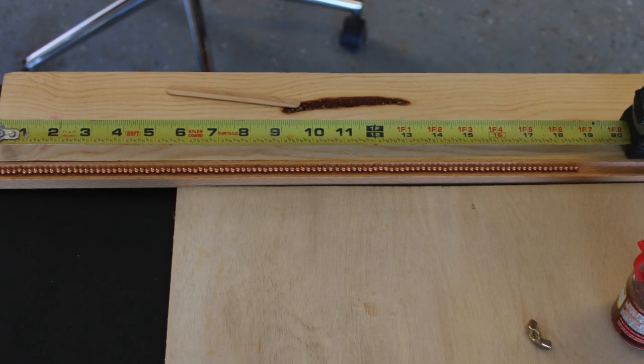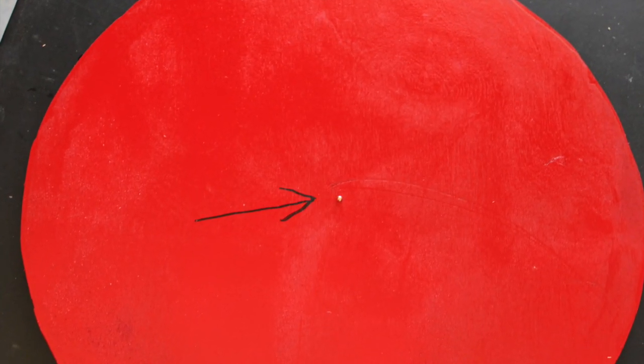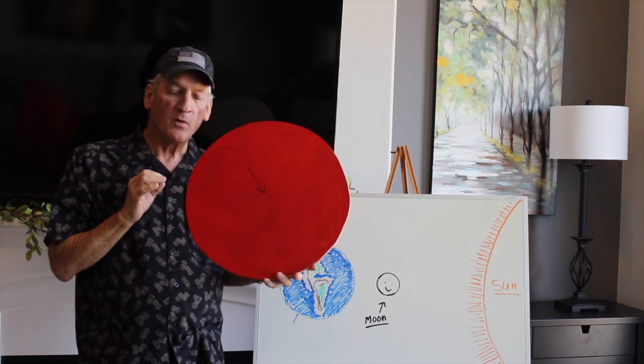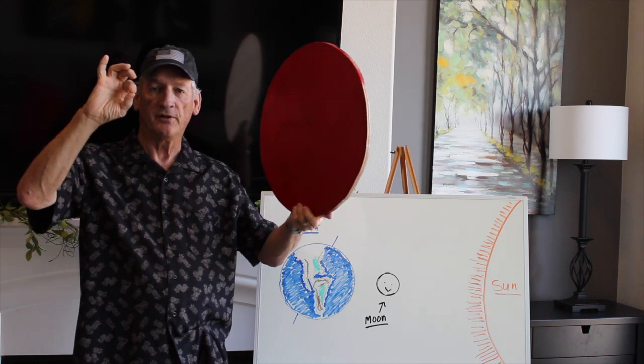So I found a piece of wood with a groove in it and I lined up 109 BBs and it came out to 18.75 inches. So the size of the sun compared to the earth, right?